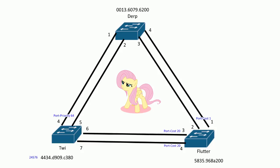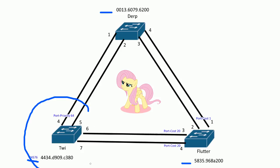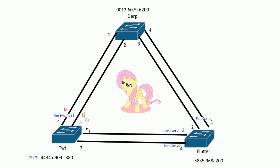Let's find the root bridge. Who has the lowest bridge ID? By default all switches are at 32,768 priority, but we have 24,576 for one bridge priority — so that one wins and becomes the root bridge. Let's go ahead and make all those ports designated ports on the root bridge: designated, designated, designated, and designated.